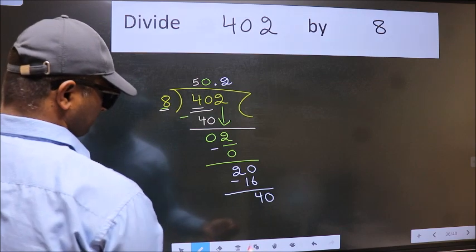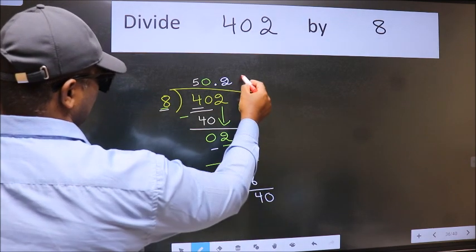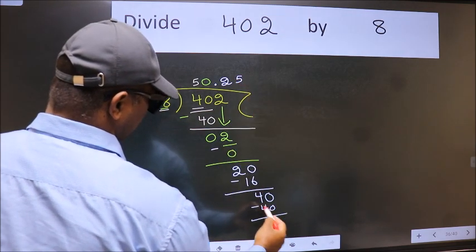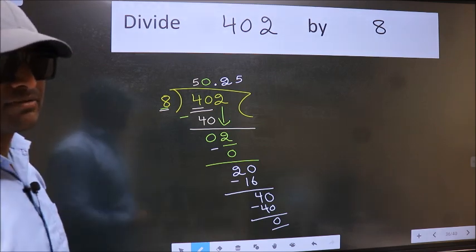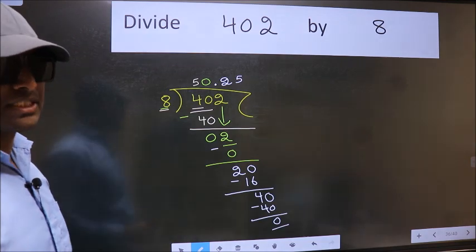So, directly take 0. So, 40. When do we get 40 in 8 table? 8 times 5, 40. Now, we subtract. We get 0. Did you understand where does the mistake happen? You should not do that mistake.